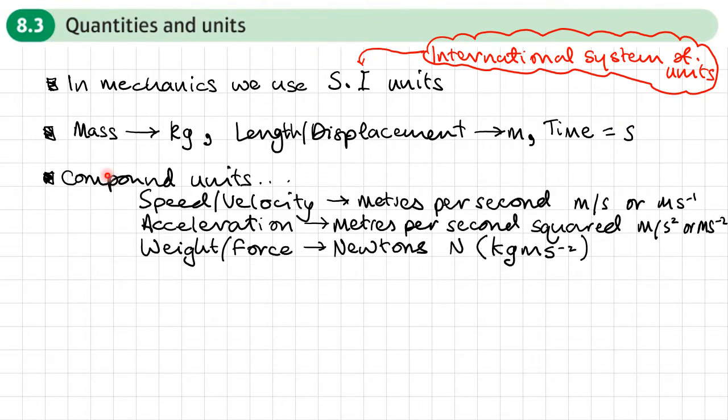So from these base units here, we can get our compound units. Speed or velocity is meters per second, which we can write M over S or M S to the minus one. Acceleration is meters per second squared, you might also say meters per second per second, which is M over S squared or M S to the minus two. And weight or force we measure in Newtons, we use the letter N, and you can see it's kilograms per an acceleration here. So you've got a mass times an acceleration.